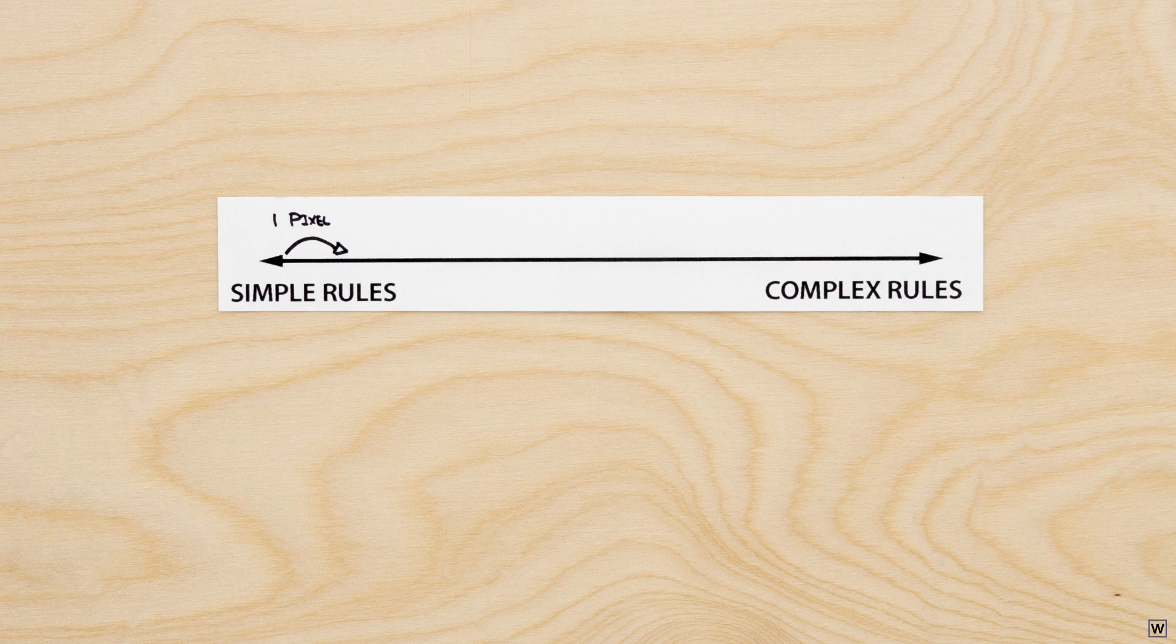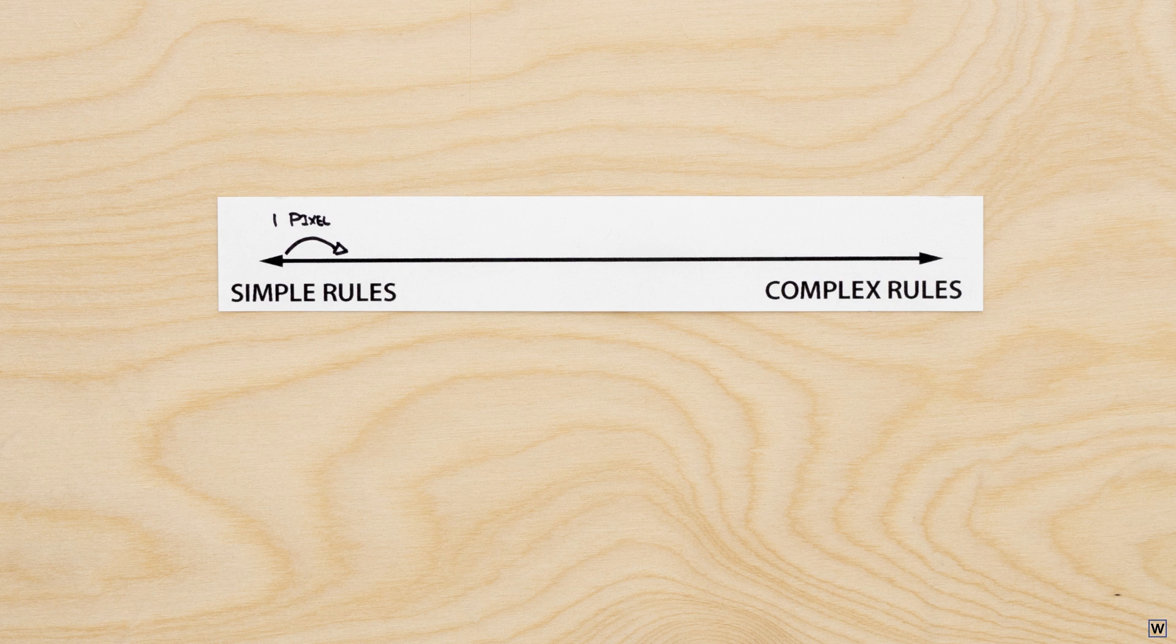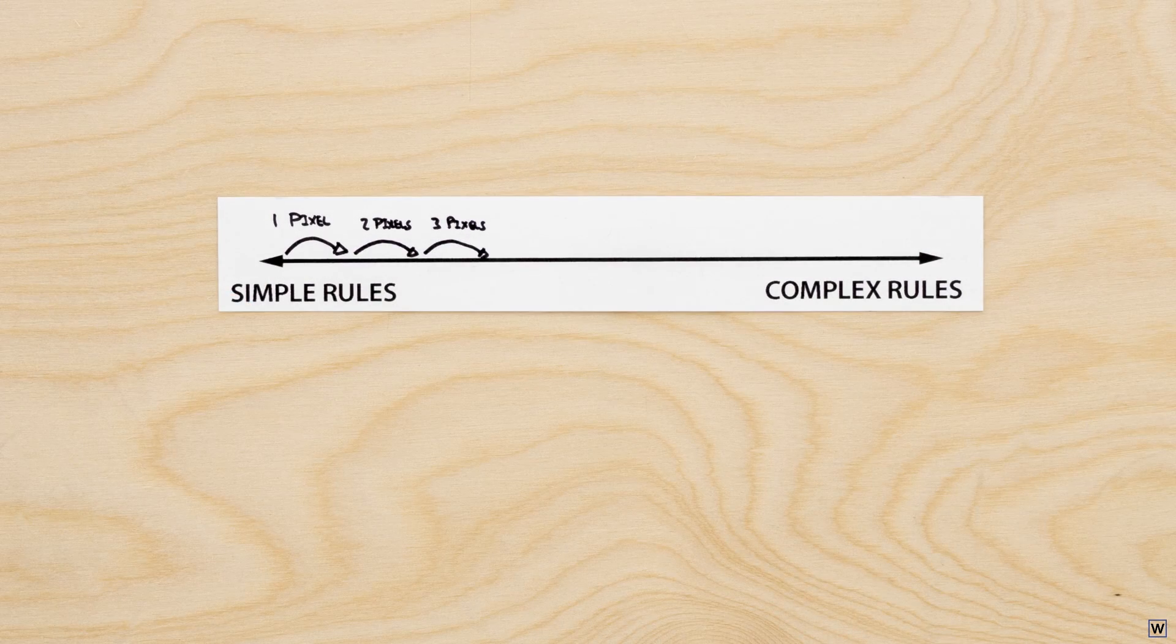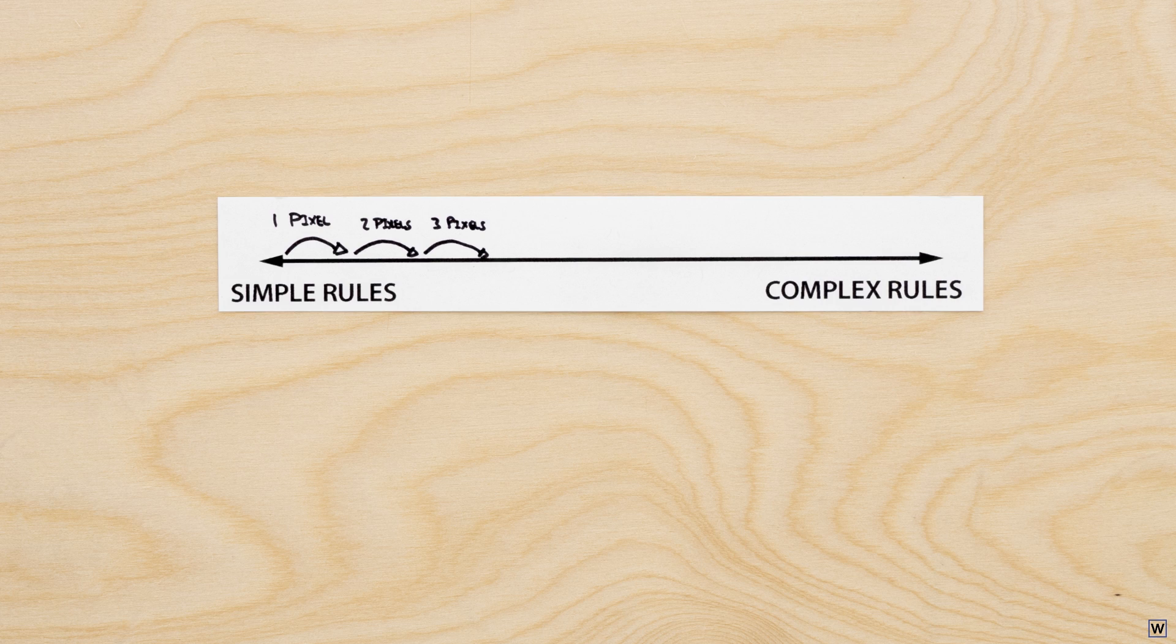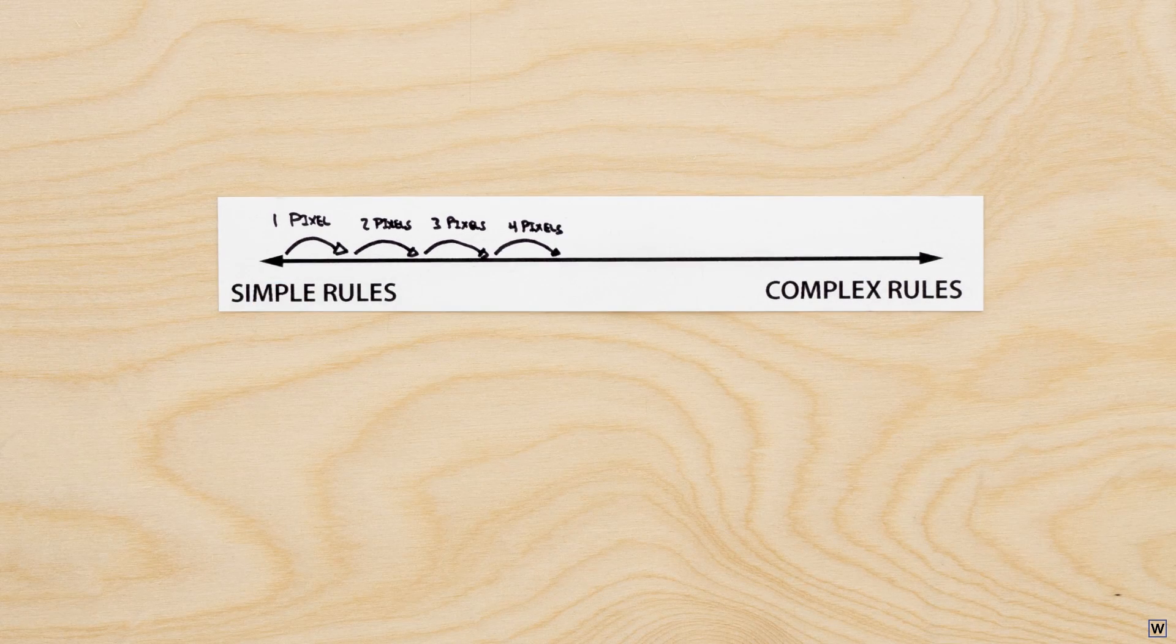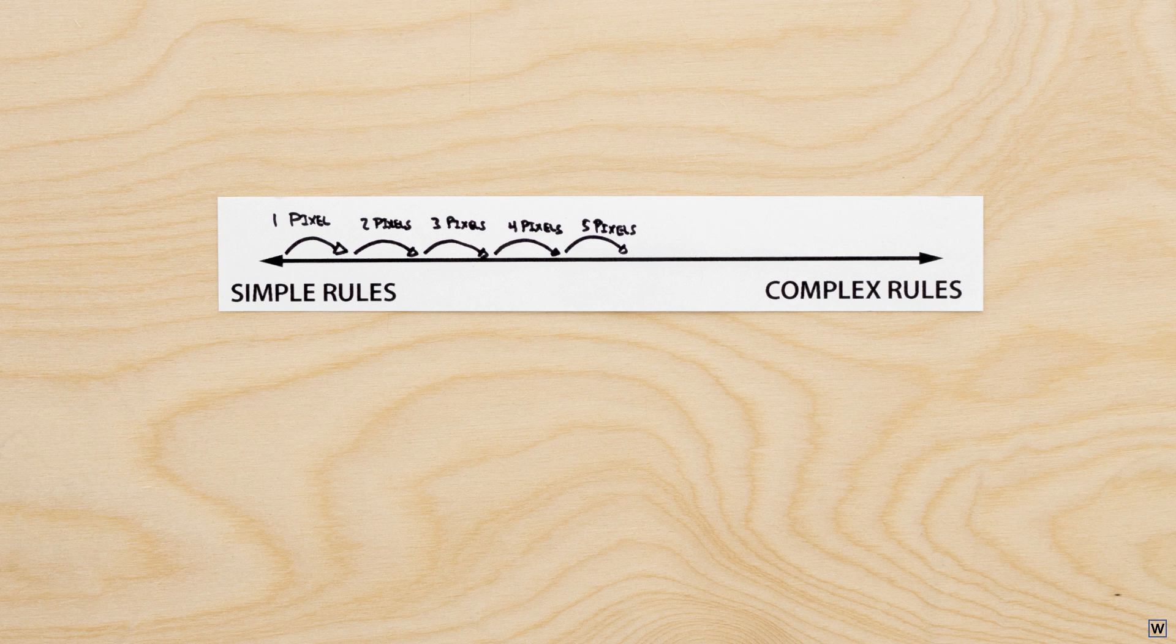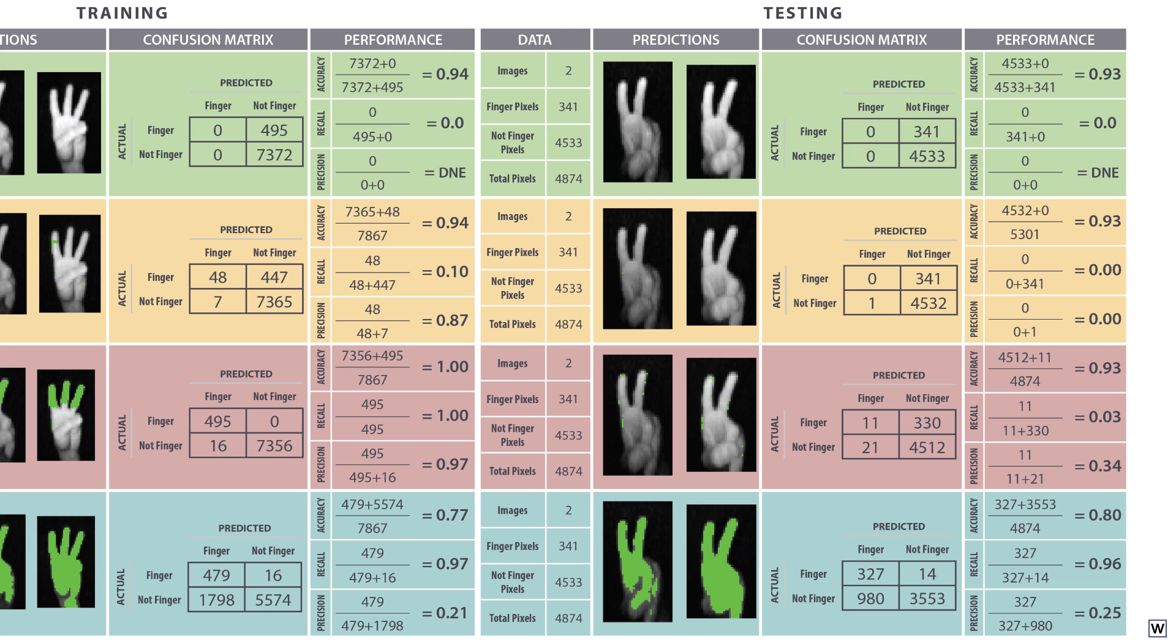Next time, we'll move further across our spectrum by increasing the number of pixels in our rules one by one. Now, how complex of a rule do you think we'll need here? How many of our 81 pixels are necessary to make a rule that reliably finds fingers in images? Our recall and precision numbers on testing data have been pretty dismal so far. How many of our 81 pixels do you think we need to boost these numbers to, let's say, 65%?